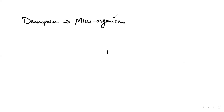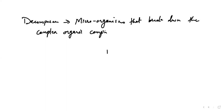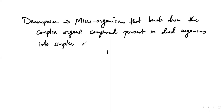Then decomposers — what will happen here is whatever microorganisms are there, they will break the substance. Whatever complex substances are there, they first break it down into the simpler ones and then consume it. These are the microorganisms that break down the complex organic compounds present in dead organisms. Examples are certain fungi or bacteria.